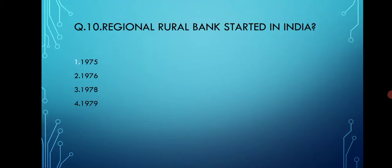When was the Regional Rural Bank started in India? Options are 1975, 1976, 1977, 1978, and 1979.